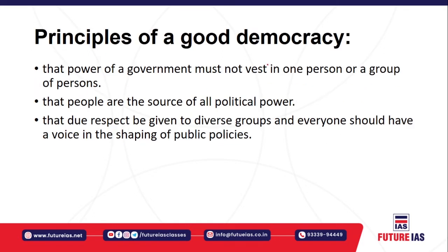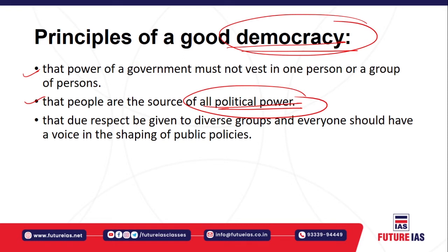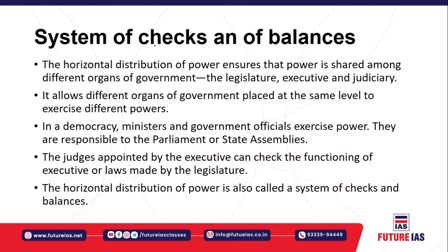Now let us understand some principles of good democracy. A democratic government is one where power is divided — it must not be vested in one particular person or group. It should be by the people, for the people. The people are the ultimate source of all political power. Due respect should be given to all sections of society, and everyone should have equal voice and equal representation.